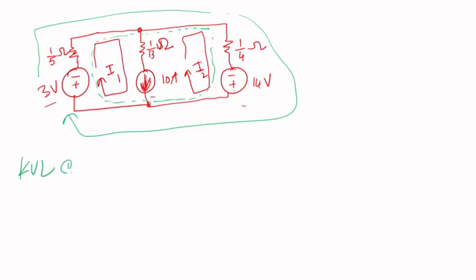So let's write KVL at super mesh. I'm gonna start from, gonna go in this direction that I showed. So I'm going from plus to minus, that's 3 volts, plus 1/5 ohms times I₁, because current I₁ is going the same direction, plus 1/4 ohms times I₂. I'm going from negative to positive, so that's minus 14 equal to zero.